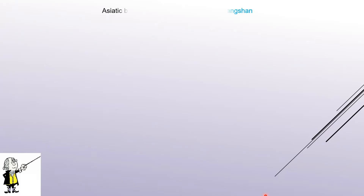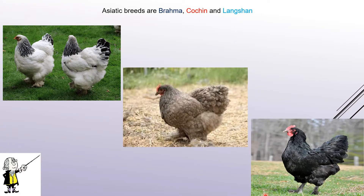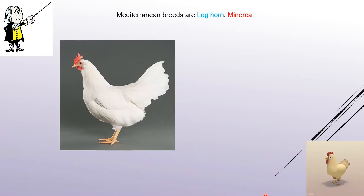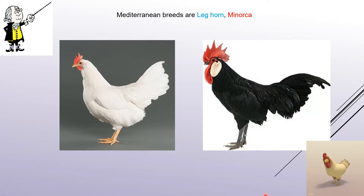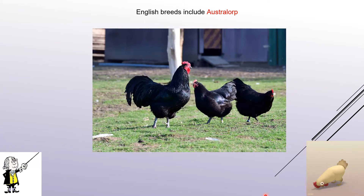Asiatic breeds include Brahma, Cochin, and Langshan. The names are very important, so keep revising and repeating them. The third variety is Mediterranean breeds, which consist of Leghorn and Minorca. English breeds include Australorp.